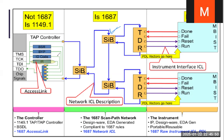In JTAG, the TAP controller is directly connected to TDR, and TDR connects to the instrument. In the case of iJTAG, we have a SIB — the SIB is connected to the TDR, TDR to the instrument, and this is connected back to the TAP controller.